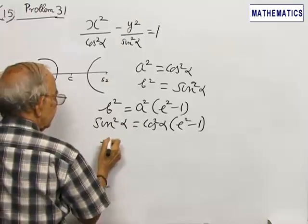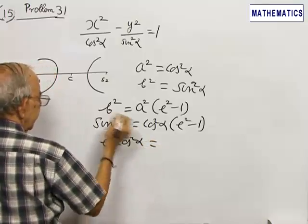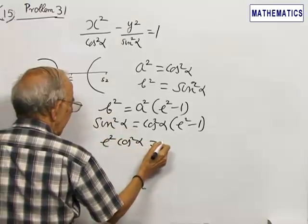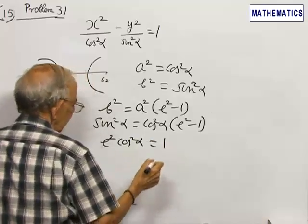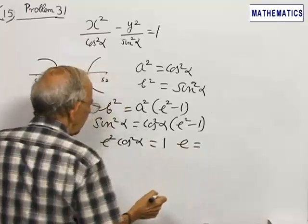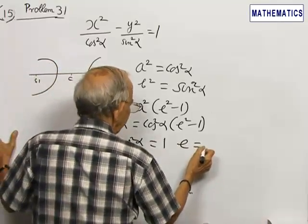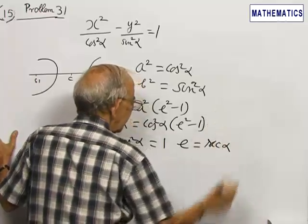That means e squared cos squared alpha is sin squared alpha plus cos squared alpha, equal to 1. Therefore, e is equal to 1 by cos alpha, that is secant alpha.